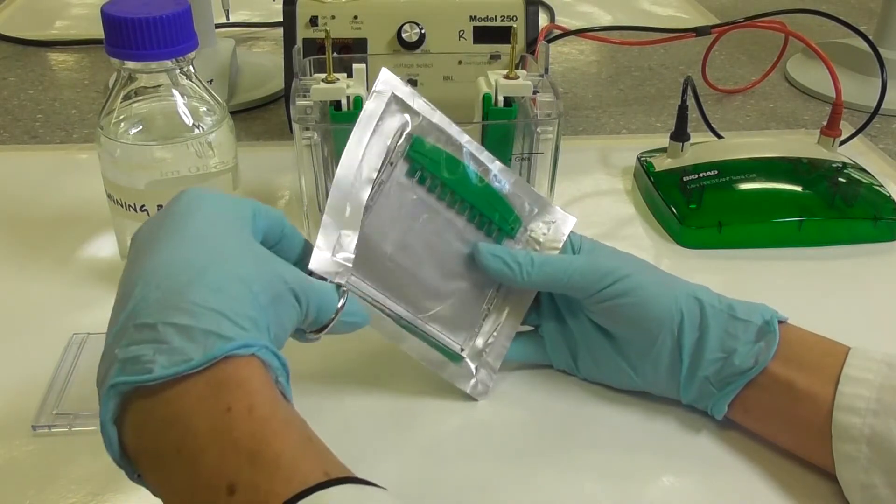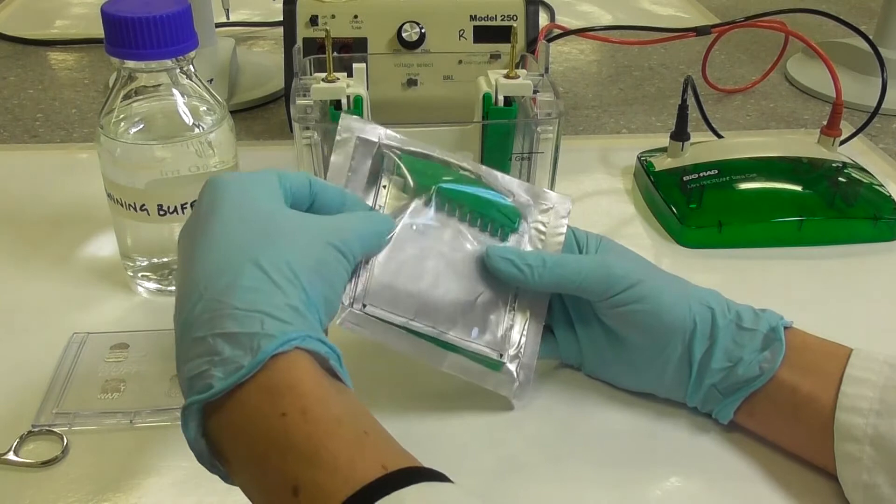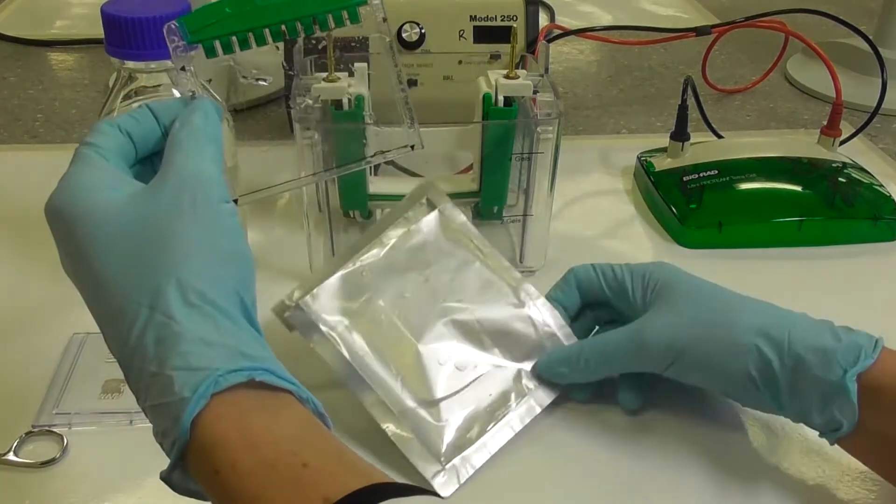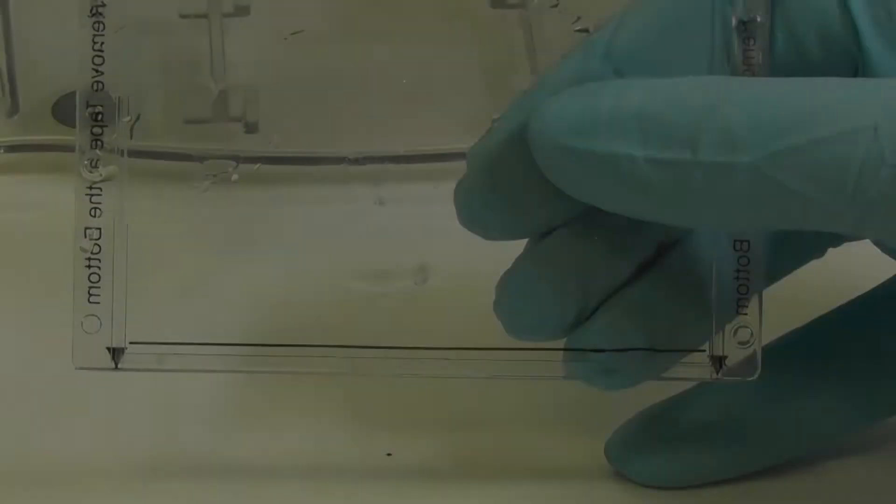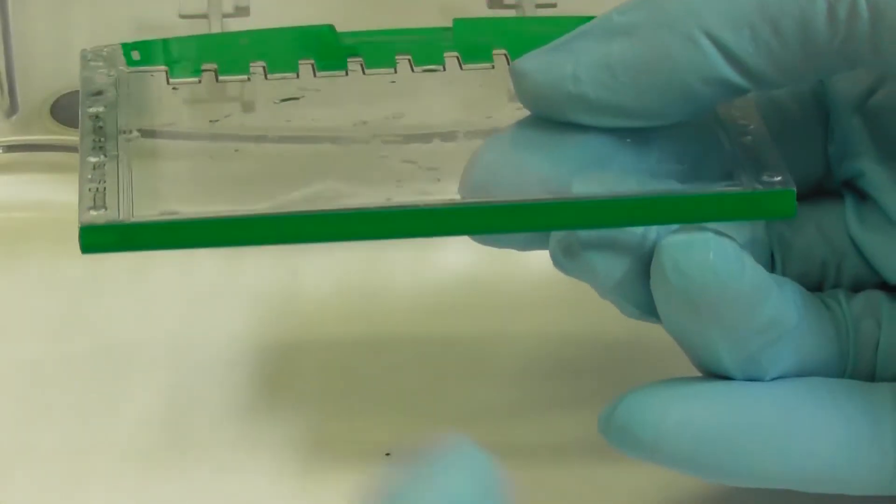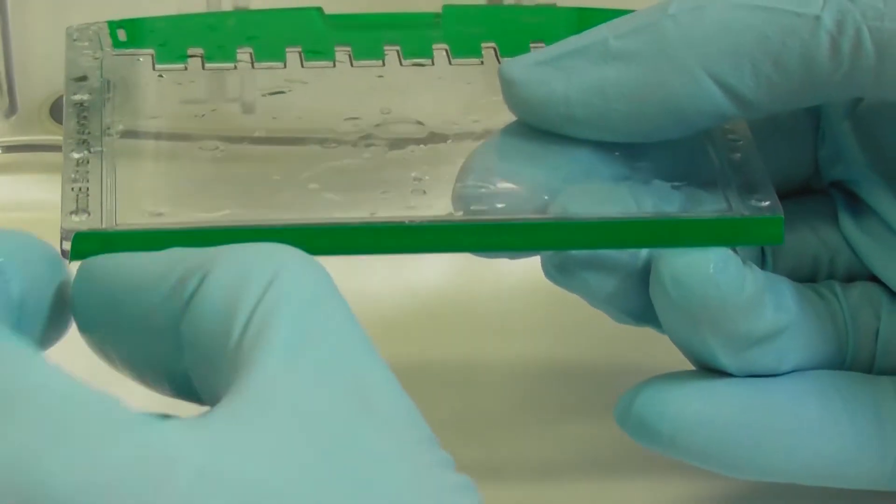Remove the precast gel from its packaging. Scissors may help if the tear tab does not work. The bottom of the precast gel is sealed with a strip of tape which must be removed before use.